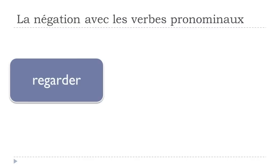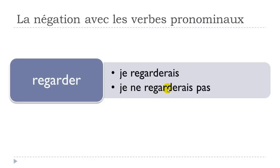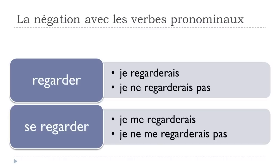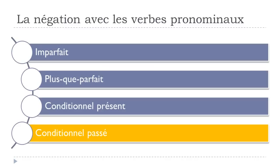CONDITIONNEL PRÉSENT: REGARDER gives JE REGARDERAIS, negative form JE NE REGARDERAIS PAS. For the pronominal form SE REGARDER: JE ME REGARDERAIS, and then JE NE ME REGARDERAIS PAS. Basically one verb, so it's not that tricky — remember that ME should stay connected, and NE goes before, PAS after.